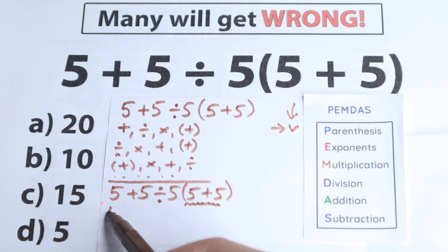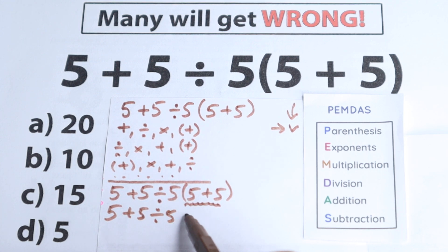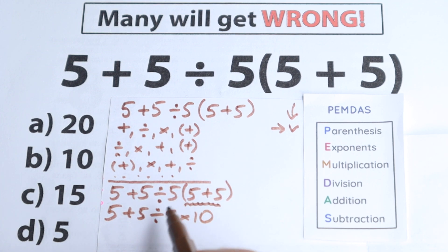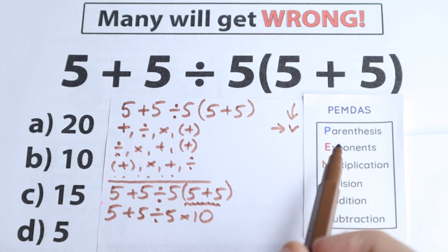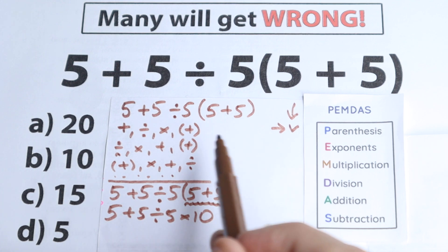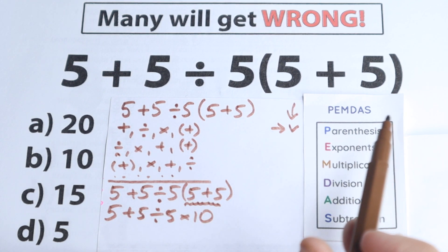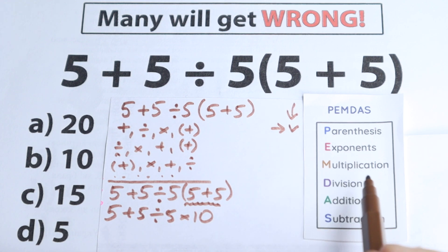So let's rewrite our question. We have 5 plus 5 divided by 5, and times 5 plus 5 in parentheses, which equals 10. So right now we have: 5 plus 5 divided by 5 times 10. It doesn't matter which order of operations you select — whether BODMAS or PEMDAS — you need to start from these brackets, you need to start from these parentheses.